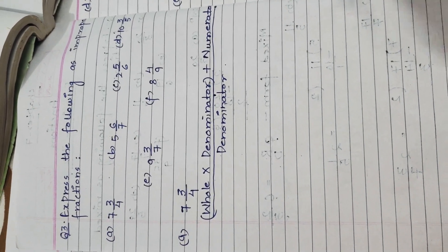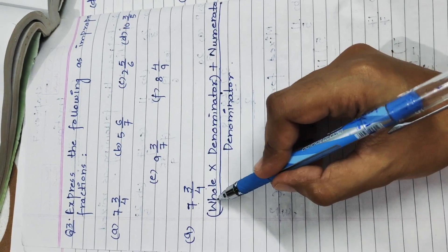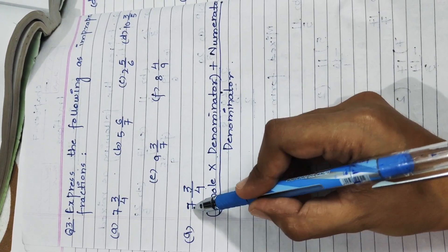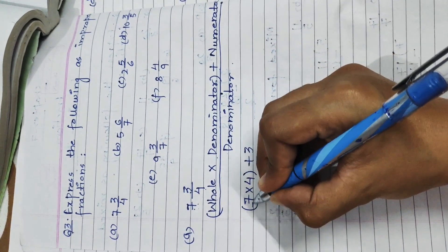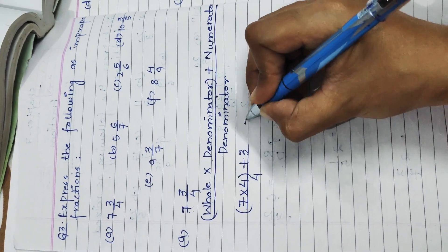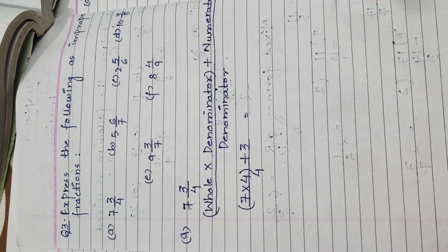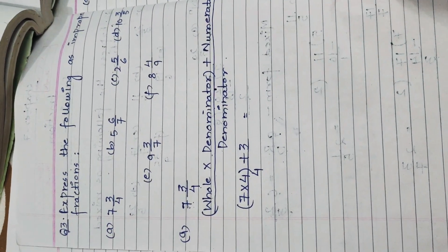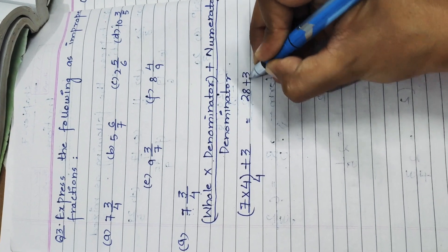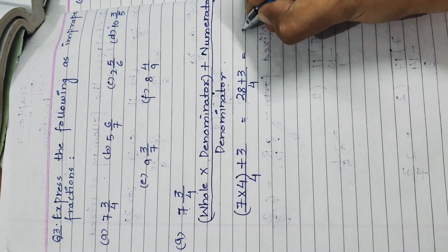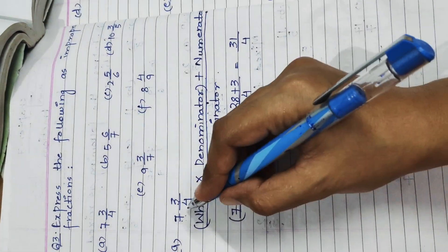Here, the whole is 7, the denominator is 4, and the numerator is 3. Applying the formula: whole multiplied by denominator is 7 × 4, plus numerator 3, divided by denominator 4. Following BODMAS, we solve the bracket first: 7 × 4 = 28, then 28 + 3 = 31. So the answer is 31 upon 4 — an improper fraction because the numerator is greater than the denominator.